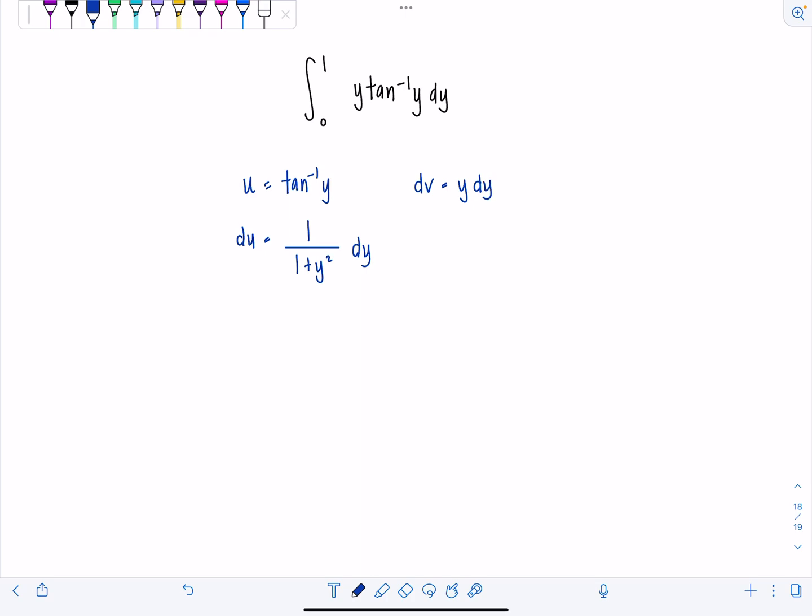And then v is going to be y dy, I mean dv would be y dy, making v, the antiderivative, 1 half y squared. Lovely.